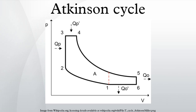The ideal Atkinson cycle consists of the following operations: 1-2 isentropic or reversible adiabatic compression, 2-3 isochoric heating, 3-4 isobaric heating, 4-5 isentropic expansion, 5-6 isochoric cooling, and 6-1 isochoric cooling.